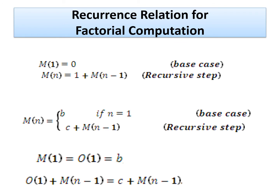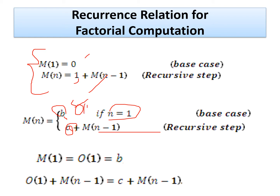The recurrence relation for factorial is: m(1) = 0 (base case, no multiplications), and m(n) = 1 + m(n-1) for n>1. Taking time step b for the base case and constant c per multiplication, what matters is that you add C for n-1 iterations, giving a linear order of growth O(n). That is the idea — the basic operation dominates the order of growth.